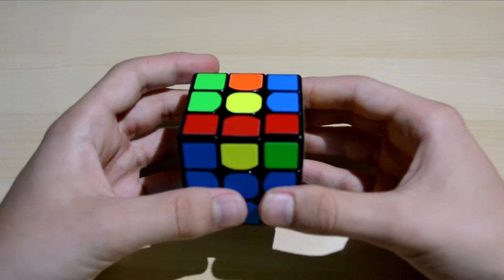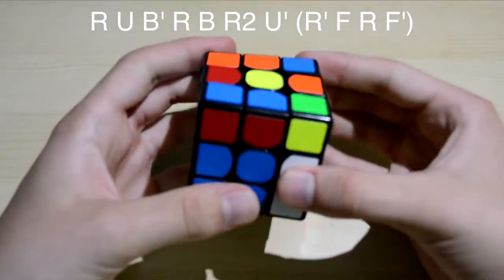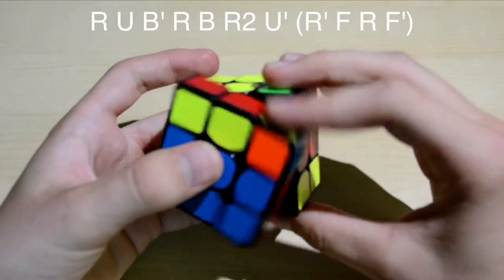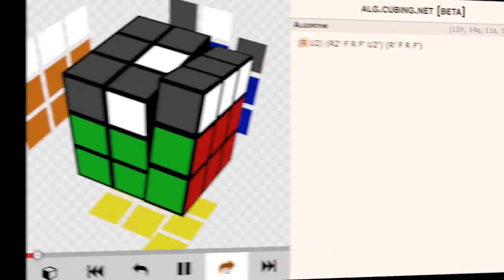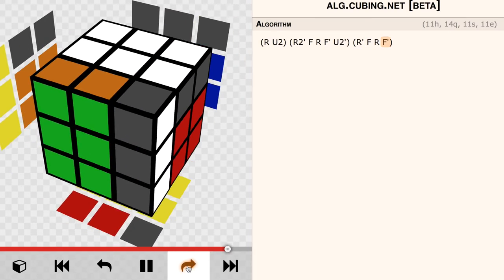You can also solve the OLL with this algorithm: R U B' R B R2 U R' F R F'. I'm pretty sure I'm gonna use the first algorithm because I don't really like the B moves.